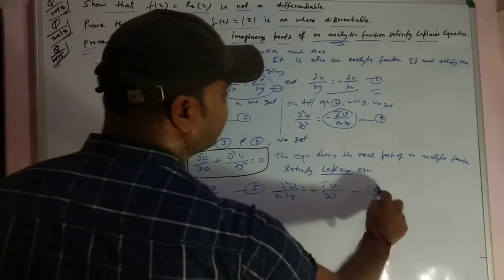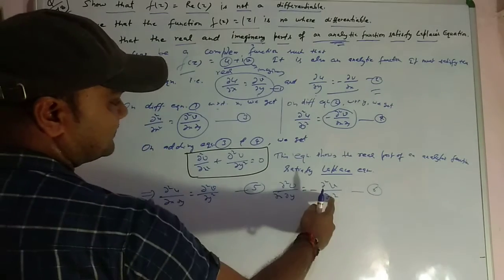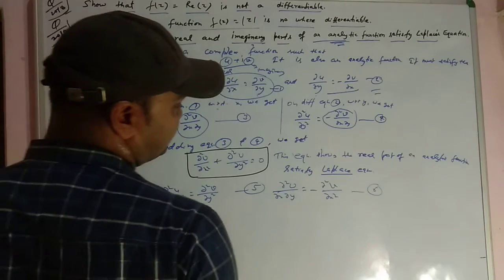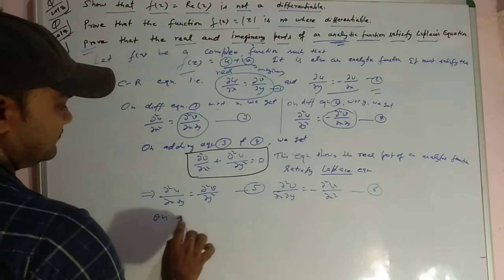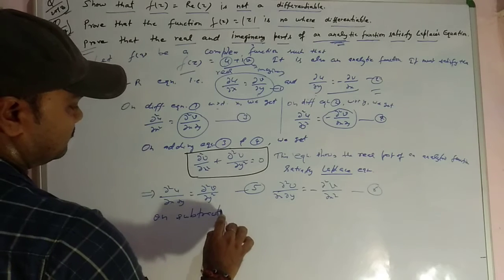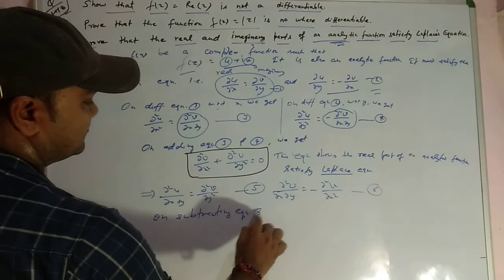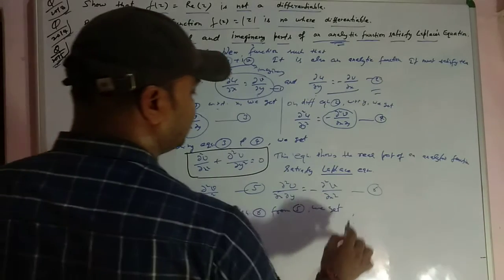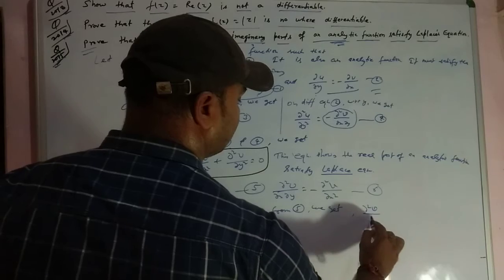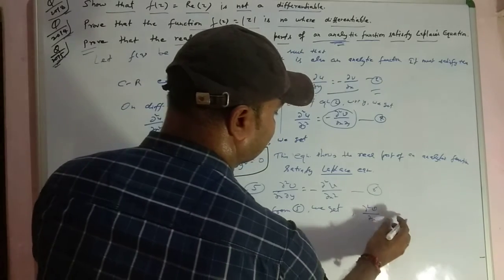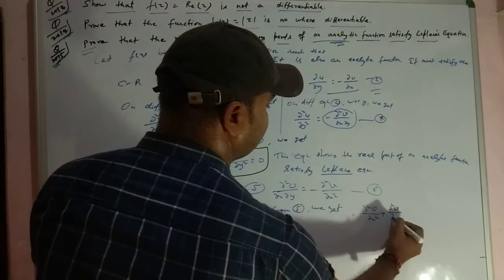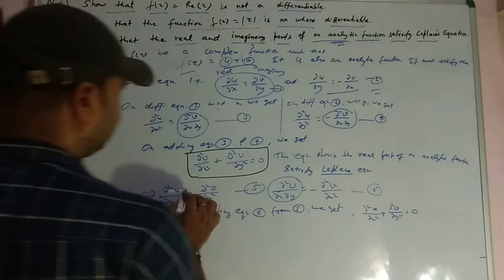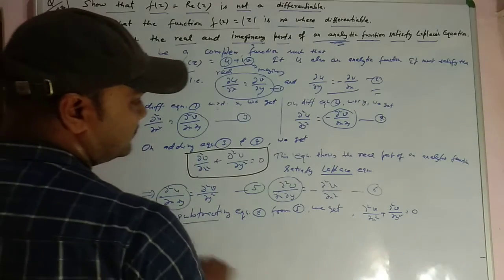अब अगर हम 5 minus 6 करेंगे, on subtracting equation 6 from 5, we get: del²v upon del x² plus del²v upon del y² equal to 0। यह दोनों चीज़ें same हैं, तो minus करेंगे — subtract करेंगे — तो 0 हो जाएगा।